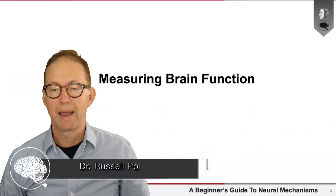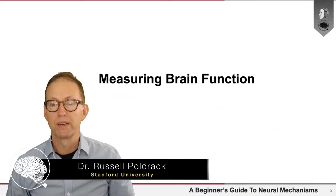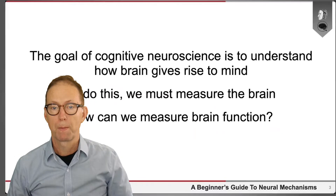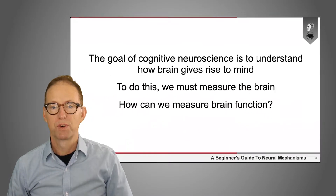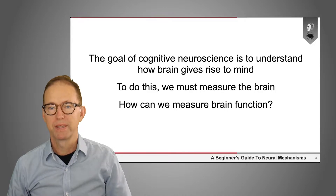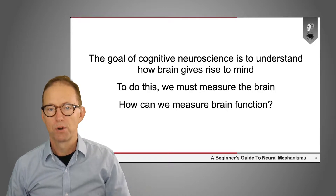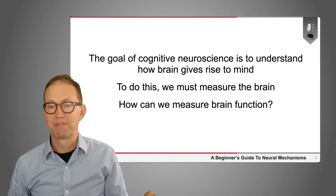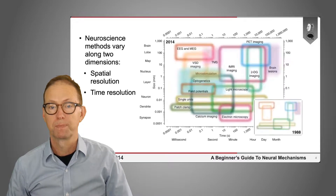In this lecture, we'll talk about how we go about measuring brain function. The goal of cognitive neuroscience is often thought of as understanding how it is that the brain gives rise to the mind. And in order to do this, we have to be able to measure the brain. So how do we go about measuring brain function?